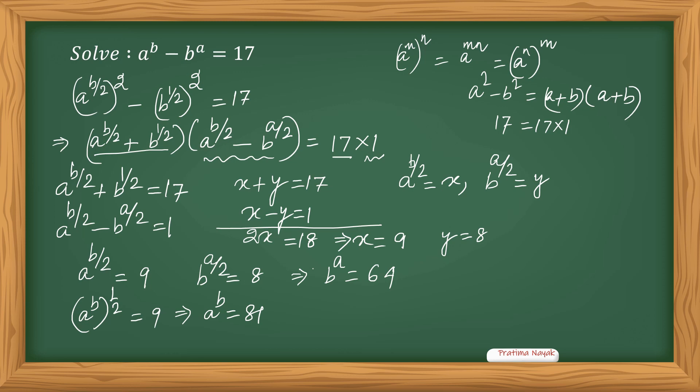Now we have to apply math knowledge, exponential knowledge: 81 equals 3 to the power 4, whereas 64 equals 4 to the power 3. So now you compare these two. We got b^a equals 4^3 and we got a^b equals 3^4. So suddenly a equals 3, b equals 4. So this is the answer.